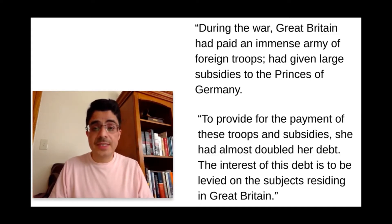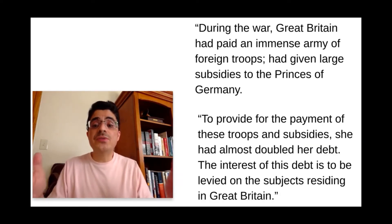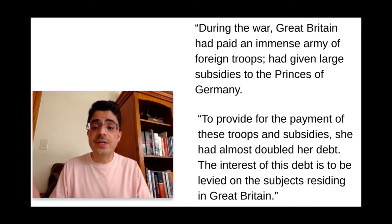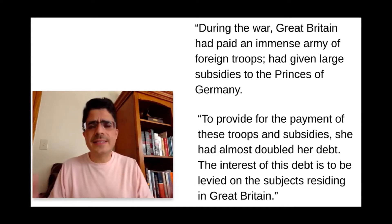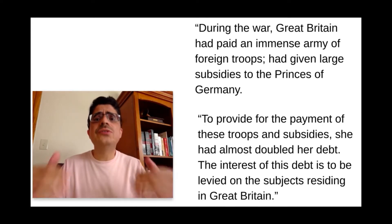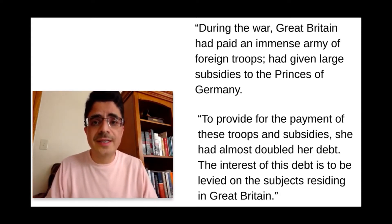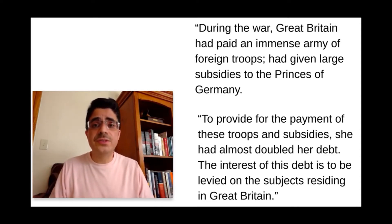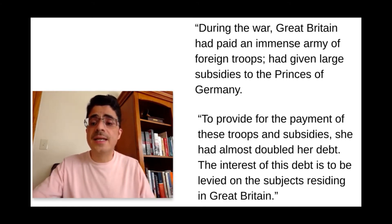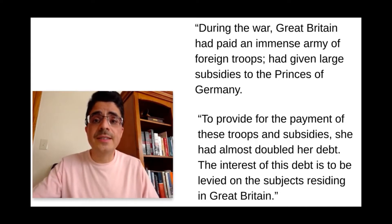Well, how are you going to pay for these guys? To provide for the payment of these troops and subsidies, she almost doubled her debt. Great Britain almost doubled her debt. The interest on this debt is to be levied on the subjects residing in Great Britain. All he's basically doing is stating the obvious: if you have a government that has bills to pay, how is this going to get paid? How are they going to pay the German troops? Through taxes. And who pays the taxes? The subjects in Great Britain, in the empire.